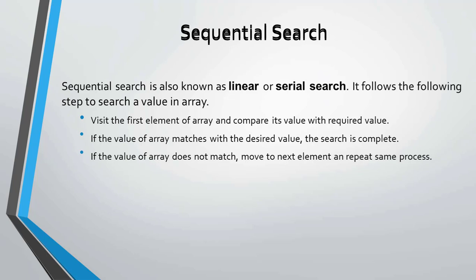Sequential search steps: First step — visit the first element of the array and compare its value with the required value. If the value of the array element matches the desired value, the search is complete. If the value does not match, move to the next element and repeat the same process.